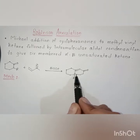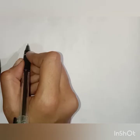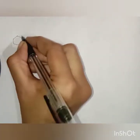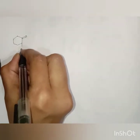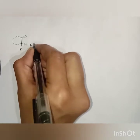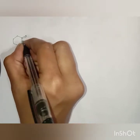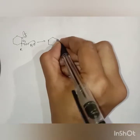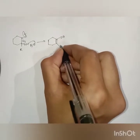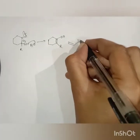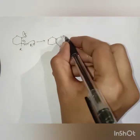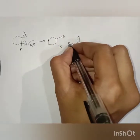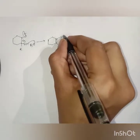We will now discuss the mechanism of Robinson Annulation. When this carbonyl compound is treated with base, the base will remove the most acidic proton, as it can conjugate with the carbonyl group, and formation of an enolate takes place. In the next step, this enolate is soft in nature and therefore it attacks on the methyl vinyl ketone in a conjugate manner.